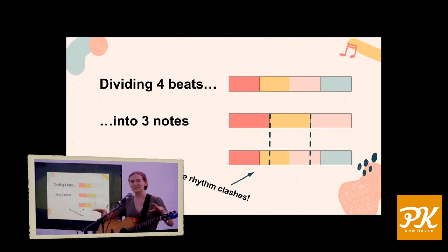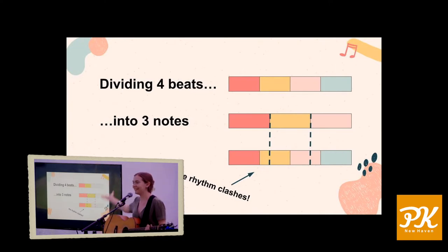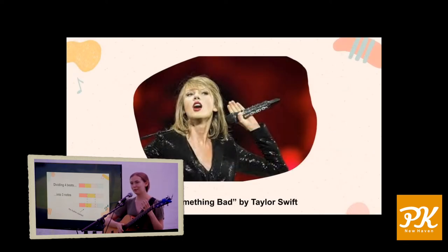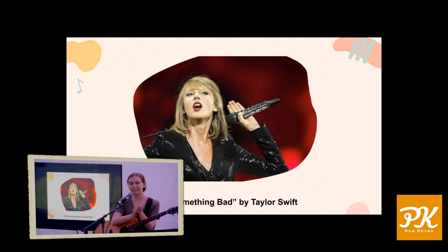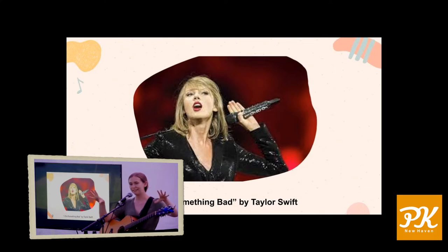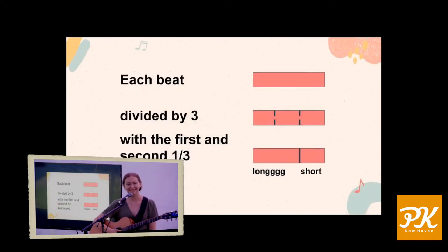Something really fun happens when we play three notes over the course of four beats — the math doesn't line up and we get this really clashing rhythm. This is what we call triplets against eighths, and it adds a lot of drama especially in pop music. If everyone claps eighth notes with me, I'll sing a melody with triplets: 'They're burning all the witches, even if you aren't one.' You hear how the melody does not fit the rhythm — it creates this really fun tension.